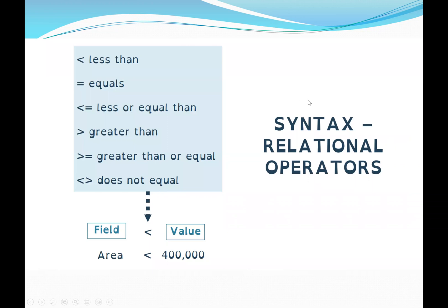When we are joining two or more relations, we use what we call relational operators. Relational operators are: less than, equal, less than or equal, greater than, greater than or equal, or does not equal. For example, we may say an area is less than 400,000 — we want to focus on that area based on its size.